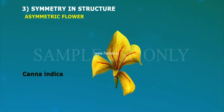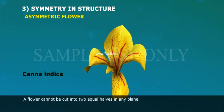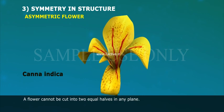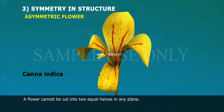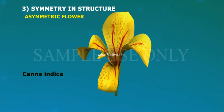Asymmetrical flower: a flower cannot be cut into two equal halves in any plane. Example: canna indica.